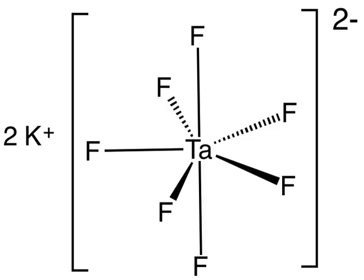Reactions: K2TaF7 is primarily used to produce metallic tantalum by reduction with sodium. This takes place at approximately 800 degrees Celsius in molten salt and proceeds via a number of potential pathways. K2TaF7 + 5Na → Ta + 5NaF + 2KF.